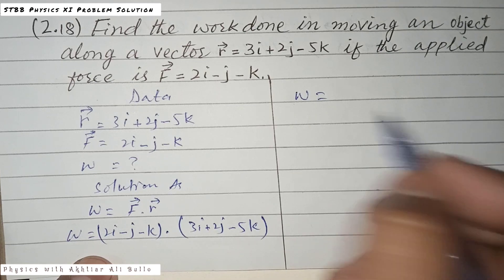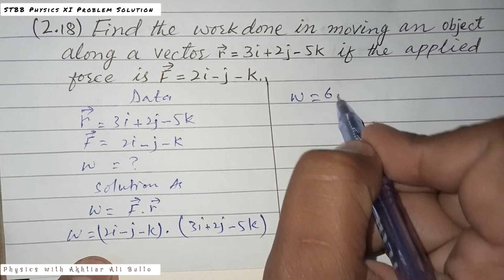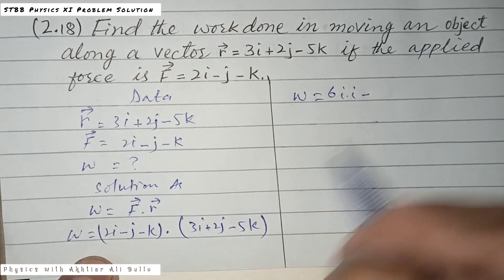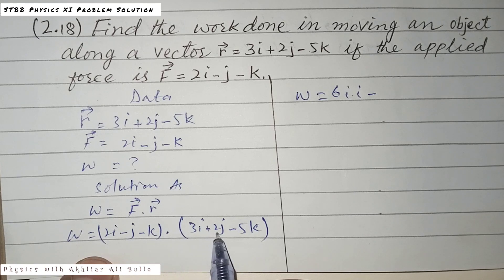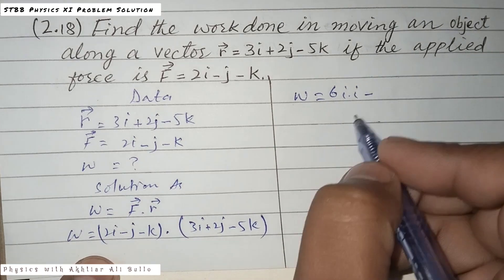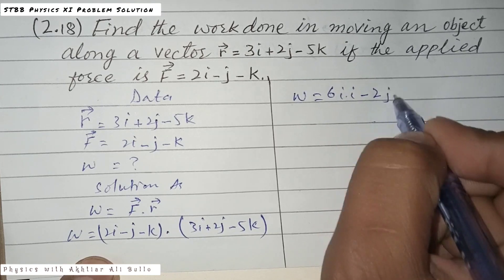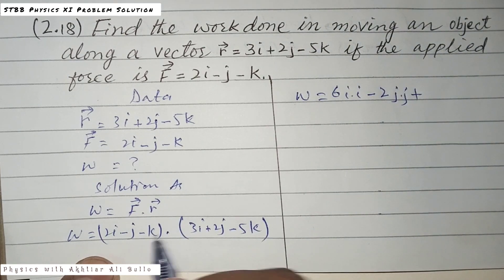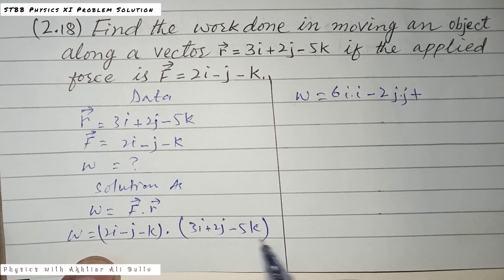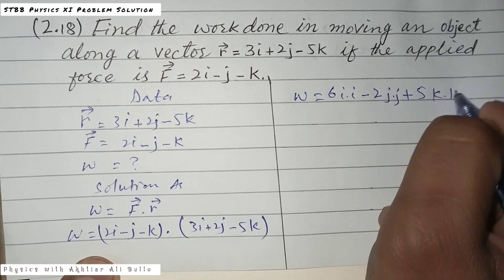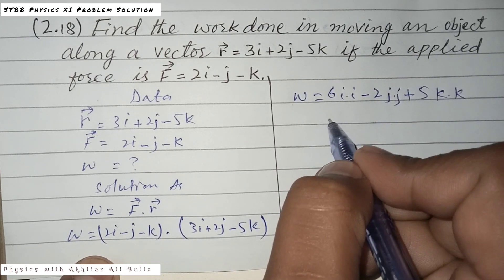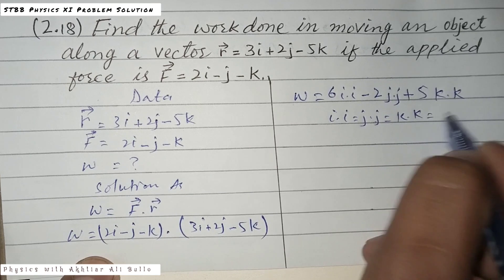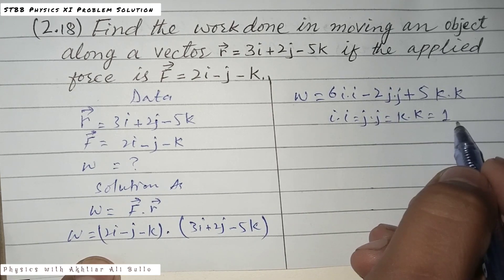2i into 3i gives 6i dot i, minus 1j into 2j gives minus 2j dot j, and minus 1k into 5k gives 5k dot k. As we know that i dot i equals j dot j equals k dot k equals 1.